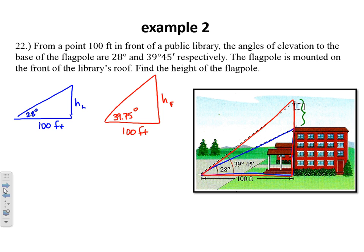So once again, we have a tangent function. Tangent of our given 28 degree angle equals H sub L over 100. So I'm just doing 100 times tangent 28. That will give me the height of just the library. So let's type that into our calculator. 100 times tangent 28. I get 53.171.